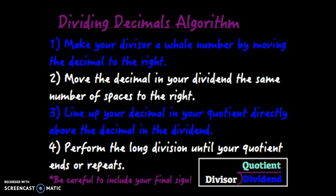Third, you want to line up your decimal and your quotient. That's your answer. You just put it directly above the decimal in the dividend. And then four, you perform long division until your quotient either ends or repeats. So we'll practice a few of these. Again, be careful to include your final sign.